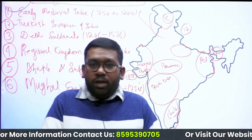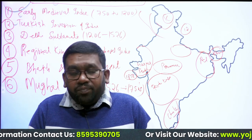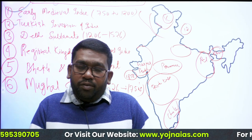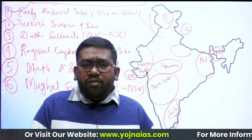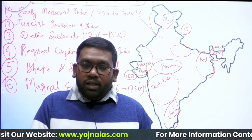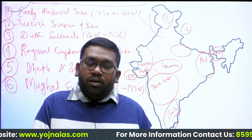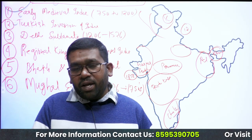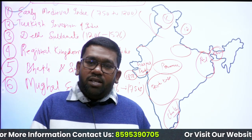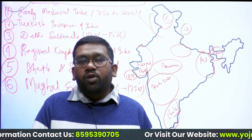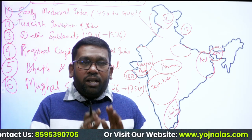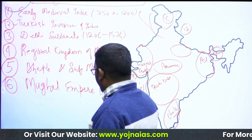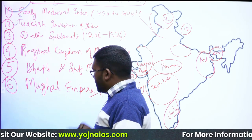After Humayun, Akbar became king in 1556 and ruled until 1605. He was followed by his son Jahangir, then Shahjahan, and then Aurangzeb. Aurangzeb died in 1707, and after that the Mughal empire started declining slowly and gradually. In medieval India we take the Mughal empire up to the 1750s, though it finally ended in 1858. So the Mughal empire is chapter six.